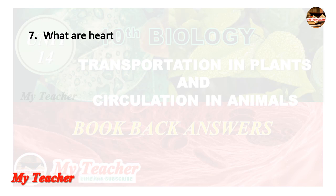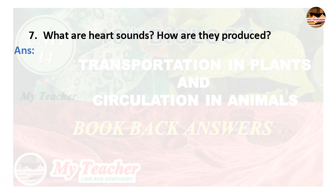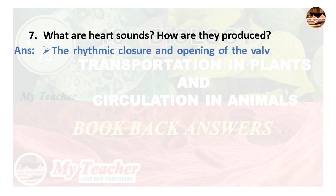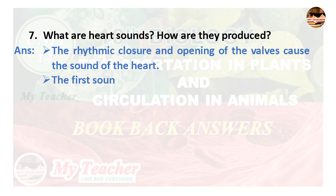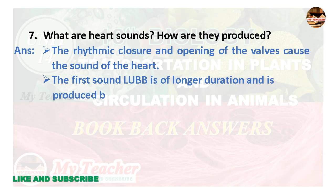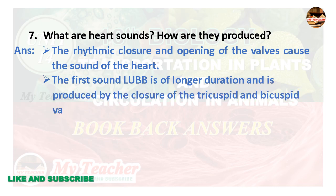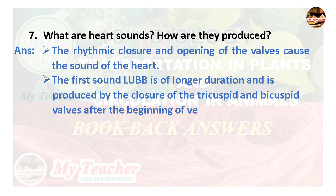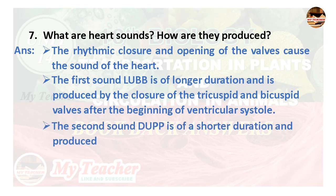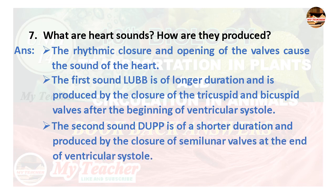Seventh question: What are heart sounds? How are they produced? Answer: The rhythmic closure and opening of the valves causes the sounds of the heart. The first sound 'lub' is of longer duration and is produced by the closure of the tricuspid and bicuspid valves after the beginning of ventricular systole. The second sound 'dub' is of shorter duration and is produced by the closure of semilunar valves at the end of ventricular systole.